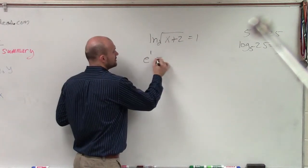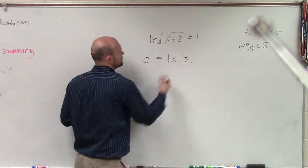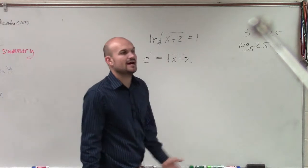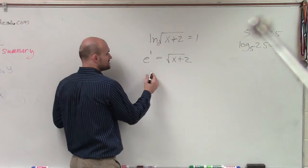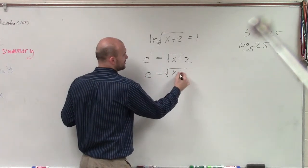e to the first power equals the square root of x plus 2. Because remember, the ln has a base e. Well now, let's go ahead and take a look at e. And Gabby, e to the first power, ladies and gentlemen, is just e equals the square root of x plus 2.